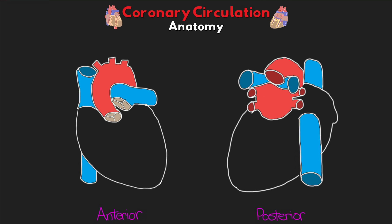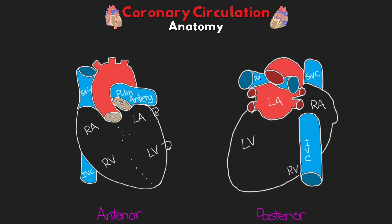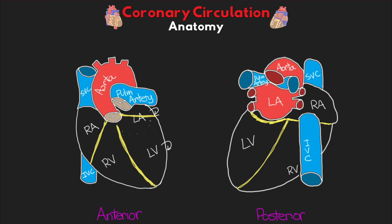Let's talk about the anatomy of the coronary vessels. We have an anterior and a posterior view of the heart that we'll use throughout this lesson. Some major structures to highlight: the left atrium, which is positioned posteriorly; the right atrium; the right ventricle; and part of the left ventricle. We also have the superior vena cava, inferior vena cava, and our pulmonary arteries, as well as the arching aorta coming down to the aortic valve. Running around the aorta we have our atrioventricular sulcus, or groove, which is the dividing line between our atria and ventricles. Running superior to inferior, we also have our interventricular sulcus on both the anterior and posterior surfaces.